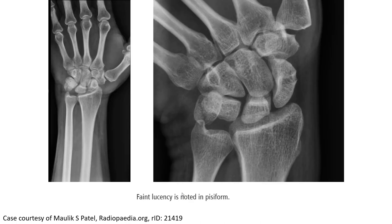Another case. On the left is the AP radiograph. And on the right, we can also see a faint lucency line across the pisiform, like in here. And this image we can see here. This is a pisiform fracture.